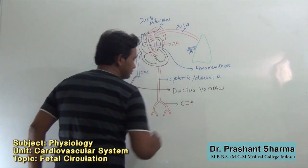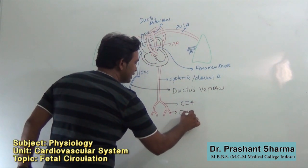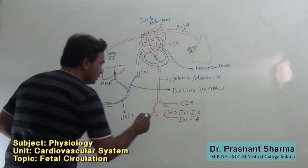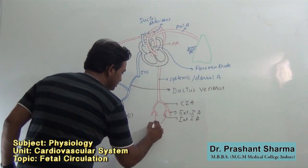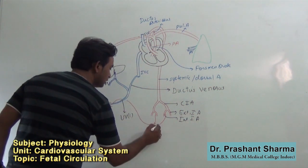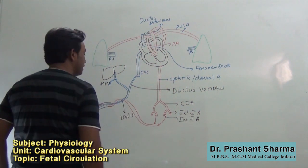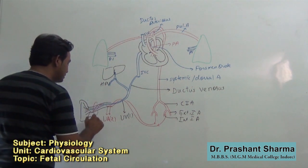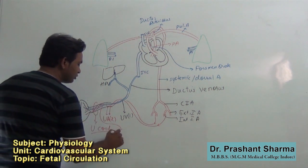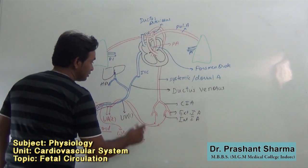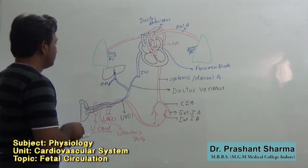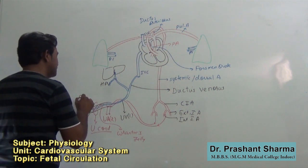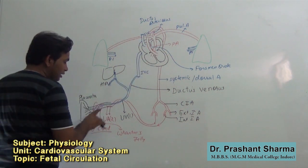These are the right and left common iliac arteries. This is the external iliac artery, and this is the internal iliac artery. One branch from each internal iliac artery arises and enters the umbilical cord as umbilical arteries. So there are two umbilical arteries and one umbilical vein inside the umbilical cord. The jelly inside is known as Wharton's jelly. The umbilical vein carries oxygenated blood from the placenta to the fetus.